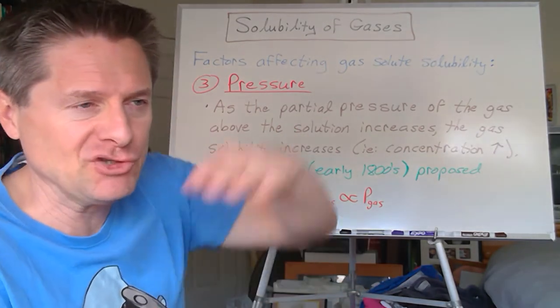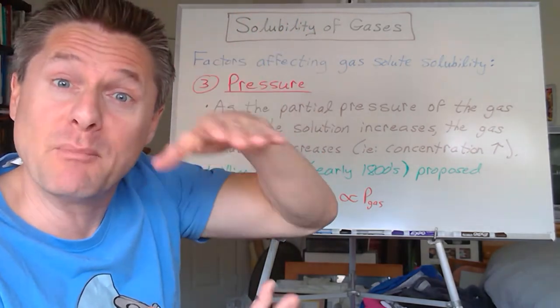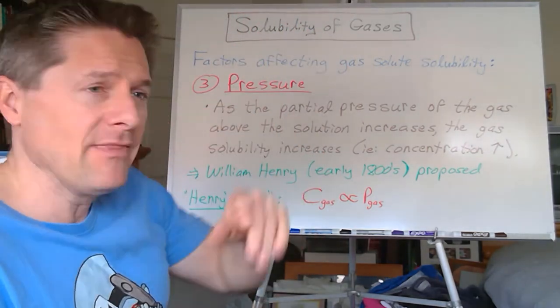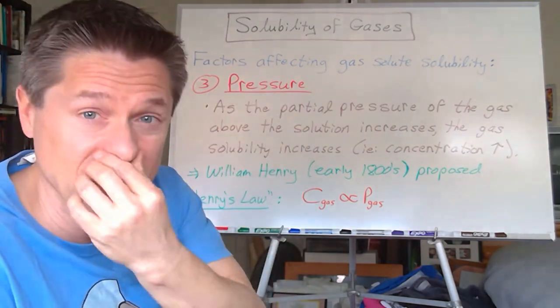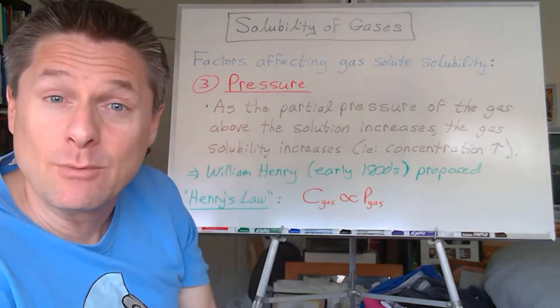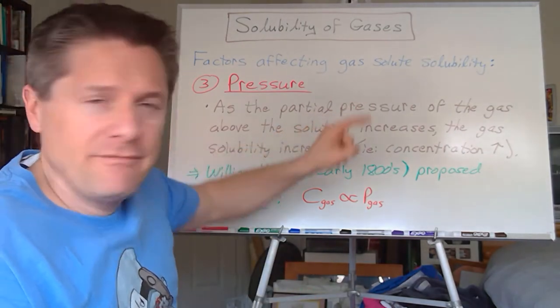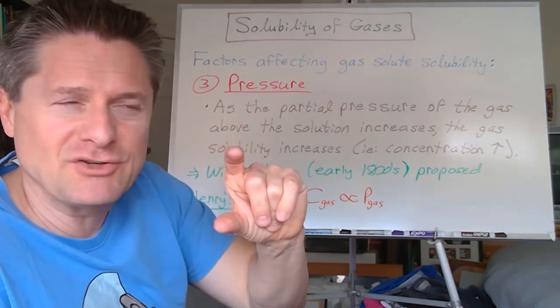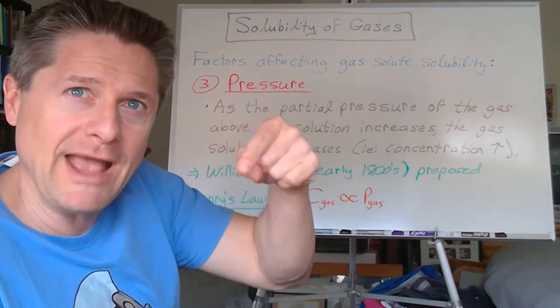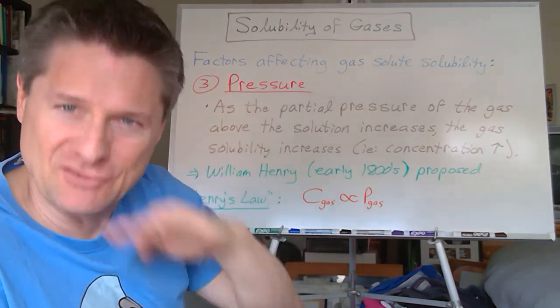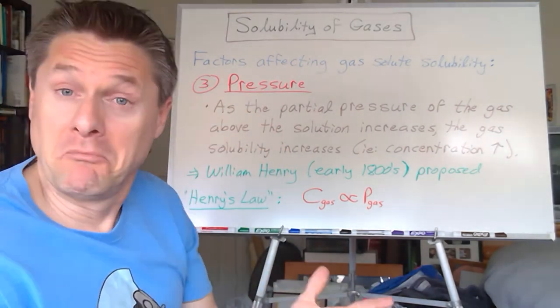So let's say we've got a solution, maybe it's a sealed container or something in equilibrium with its vapor above it. And there'll be some of the dissolved gas solute in the vapor above it and in the solution itself, and it's some equilibrium like when we talked about vapor pressure. Well, if you increase the partial pressure of the gas above the solution, more gas particles are striking the surface of the solution and are more likely to go into solution.